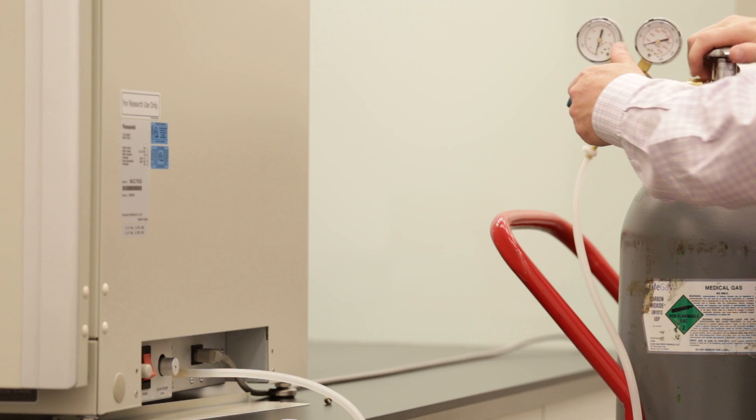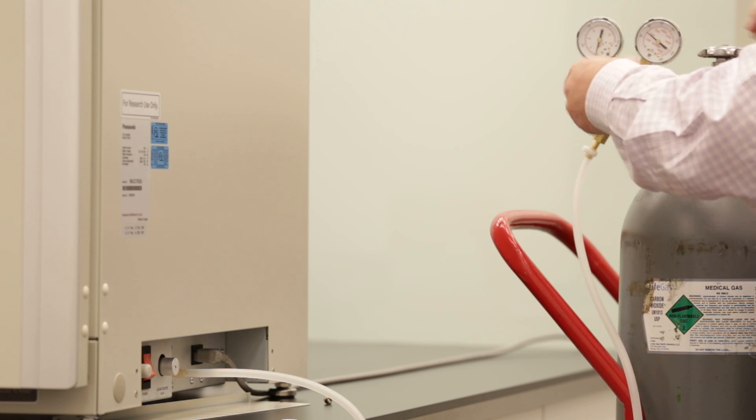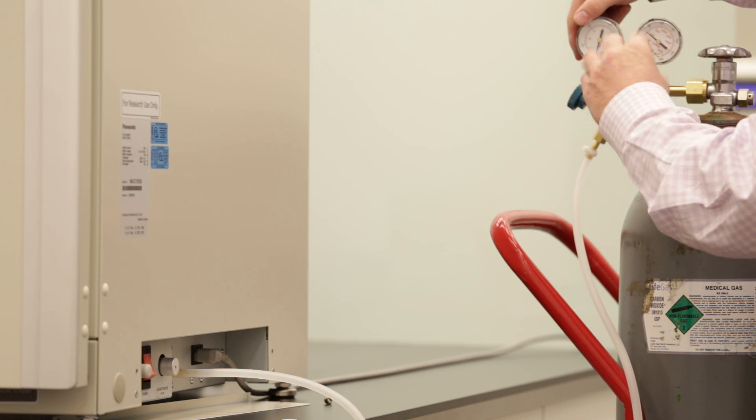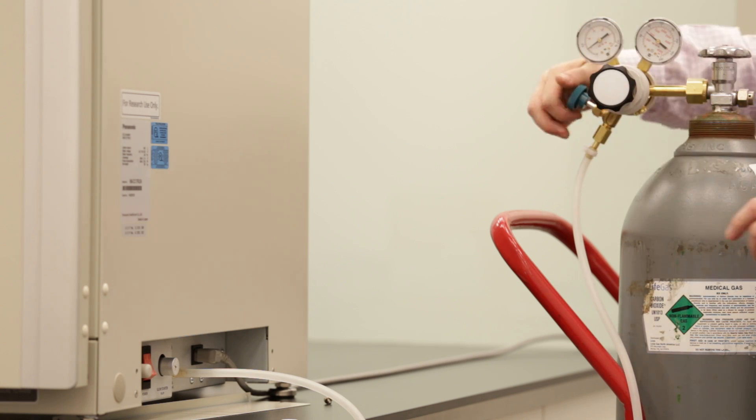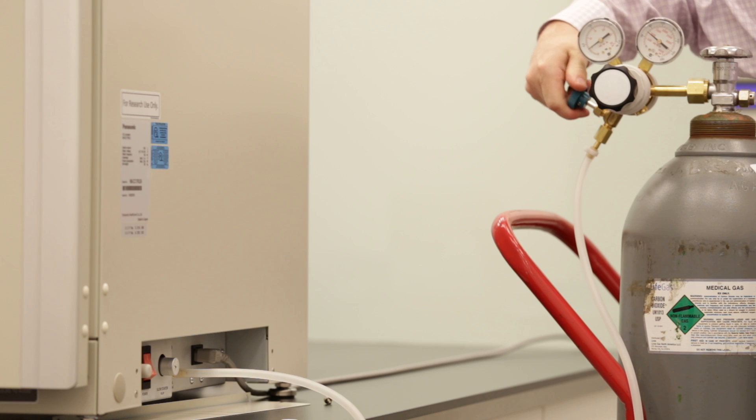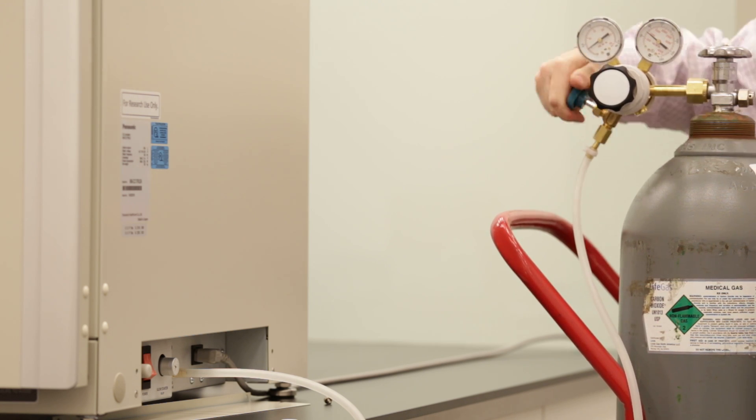Once you've done that, you're free to open the tank and adjust the regulator so that you're reaching 5 PSI on the gauge. Then you can open up the valve all the way to make sure that you're delivering your pressure to the incubator for your CO2 control.